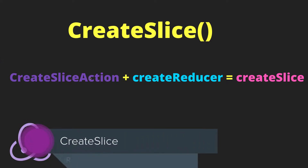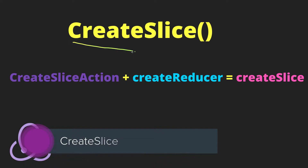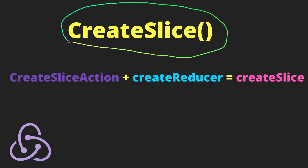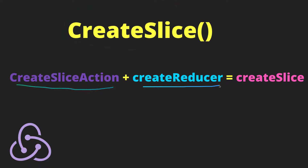Welcome back. In this video we are going to talk about another important API in Redux Toolkit called createSlice. This is what you're going to use in your day-to-day project when using Redux Toolkit. createSlice combines both createAction and createReducer, and automatically generates your action types, action creators, and your reducer.